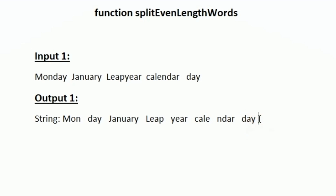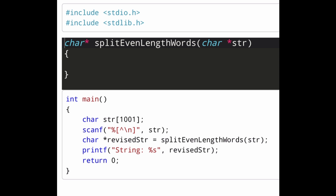Our task is to define a function named split_even_length_words. In the given main function, a character array named s_jar of size 1001 is created. Using scanf they accept the string as input — this is the format for accepting a space-separated string — and then they call split_even_length_words, storing the result in revised_s_jar and printing it.